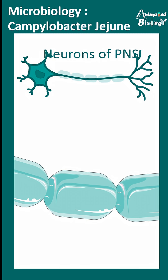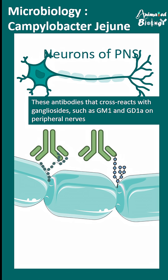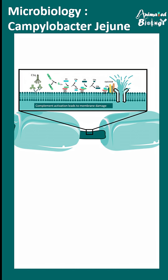Now many of these antibodies can actually affect neurons. In neurons there is a myelin sheath, which is a protective cover, and this myelin sheath has specific components such as GM1 and GD1 gangliosides. These can cross-react with the antibodies produced when Campylobacter jejuni has infected the host.